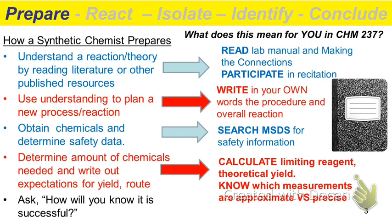Theoretical yield is important because if, while the reaction is occurring or while you're trying to isolate it, you end up with five grams at the end but your theoretical yield calculation told you that you should have ended up with 0.5 grams, you now know you're not done — you apparently have a ton of impurities. By having this information ahead of time, you can estimate and plan for changes during the experiment.